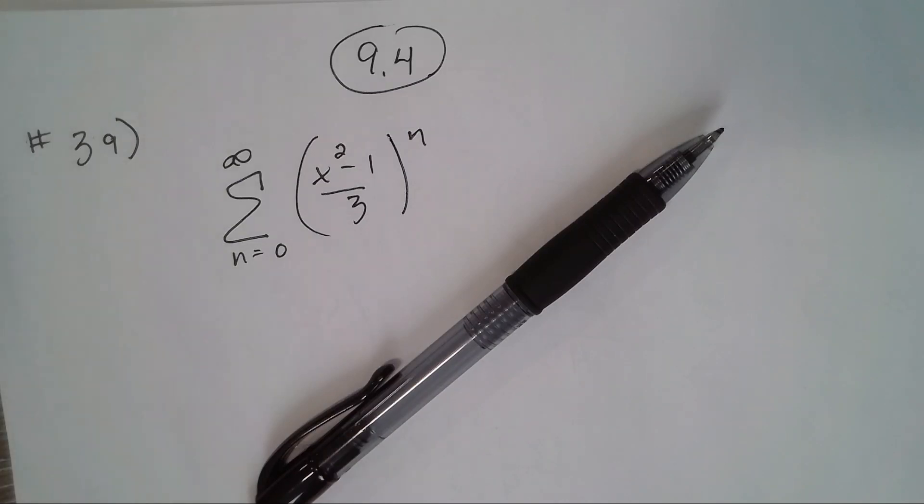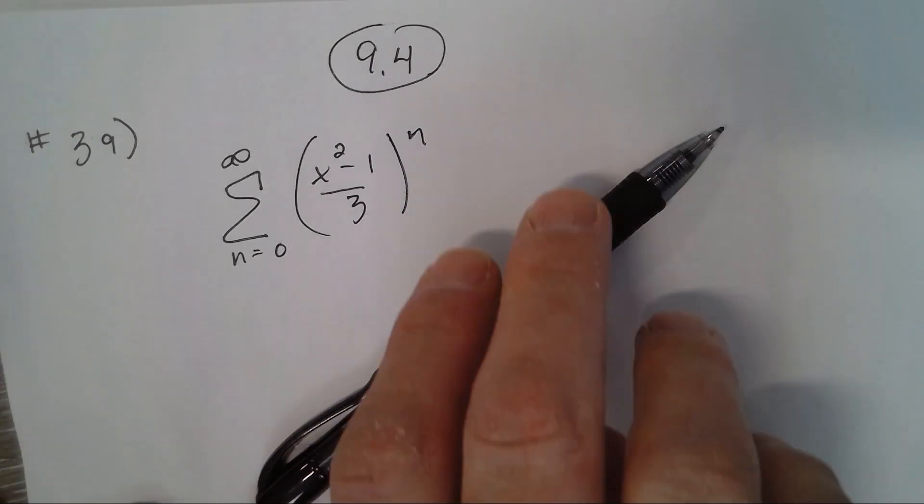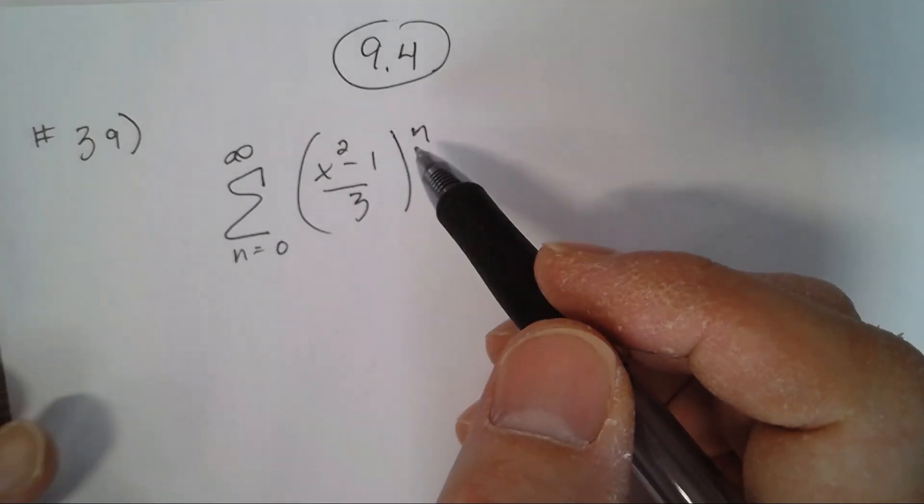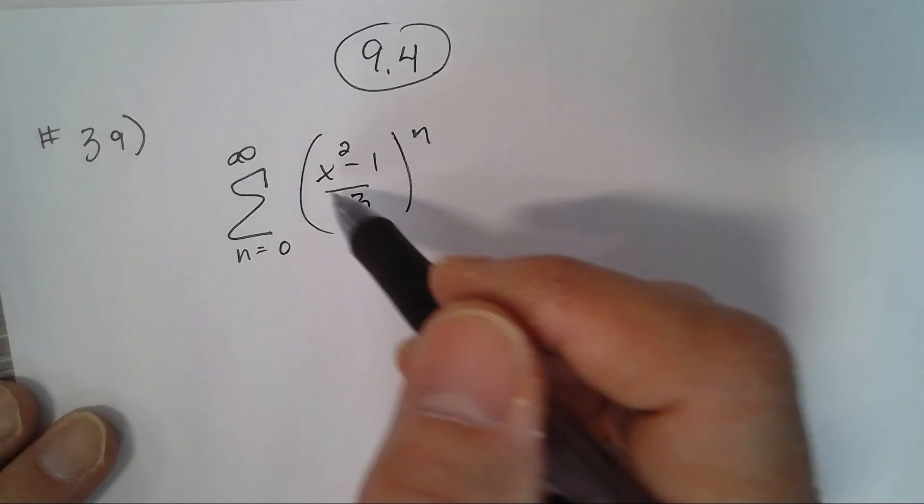9.4 number 39: find the interval of convergence and the sum of the series as a function of x. The interval of convergence occurs wherever you're multiplying or taking to the nth power, which is everything in parentheses. This has to be between negative one and one, so if we do absolute value of it, it's got to be less than one.